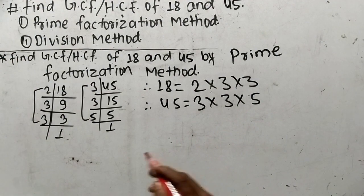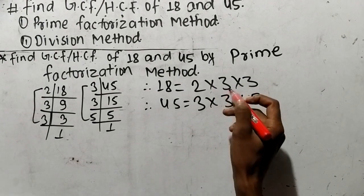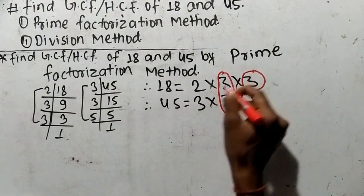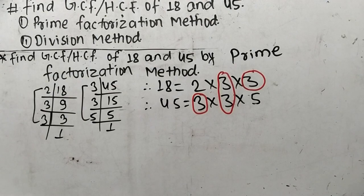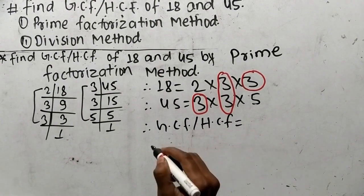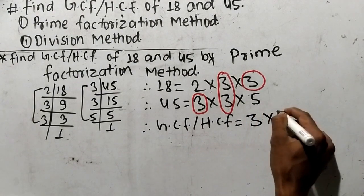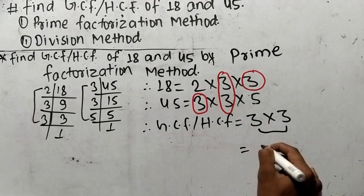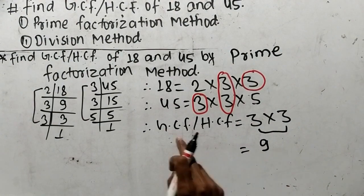Now we find out the common factors in these prime factors. Here is 3 and here is also 3, so 3 is our common factor. We also have 2 and 5 which are non-common factors. Since GCF or HCF is the product of only all common factors, we have common factors of 3 and 3. The product of these common factors is 3 times 3, which equals 9.